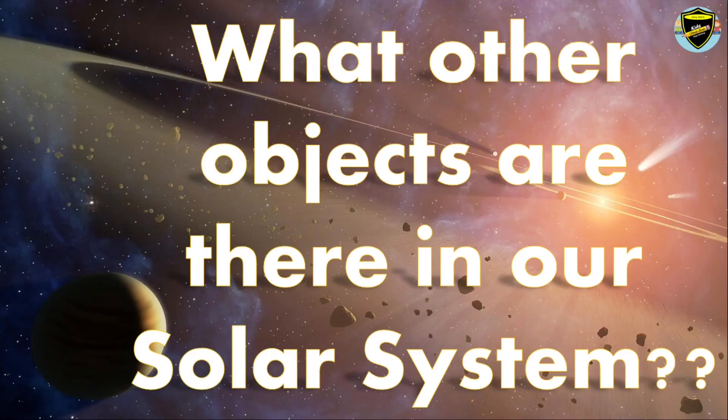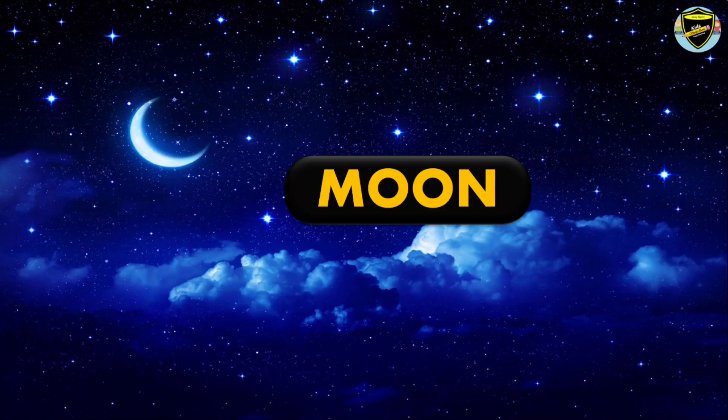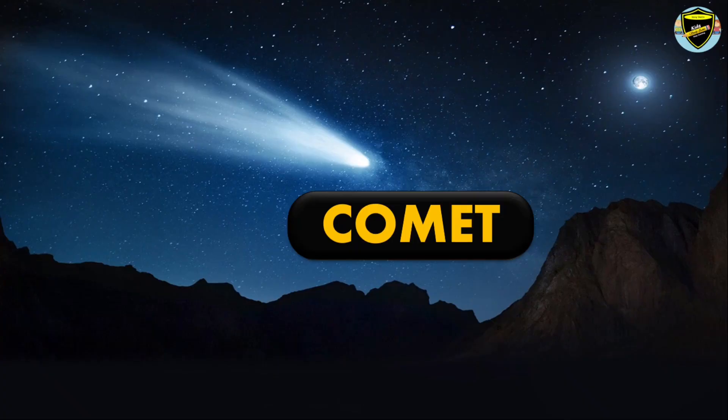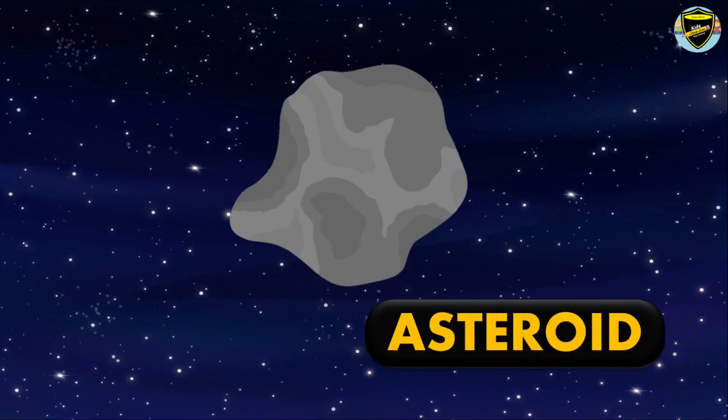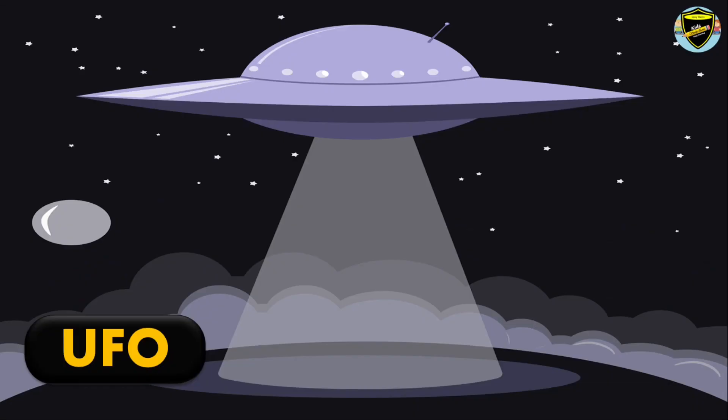What other objects are there in our solar system? Let us see and learn their names. Moon, Comet, Meteor, Asteroid, UFO - Unidentified Flying Object.